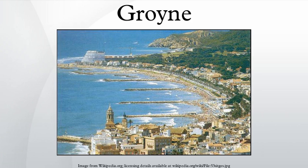By their effect on stream flow, groins can be attracting, deflecting, or repelling. Attracting groins point downstream, serving to attract the stream flow toward themselves and not repel the flow toward the opposite bank. They tend to maintain deep current close to the bank. Deflecting groins change the direction of flow without repelling it; they are generally short and used for limited, local protection.